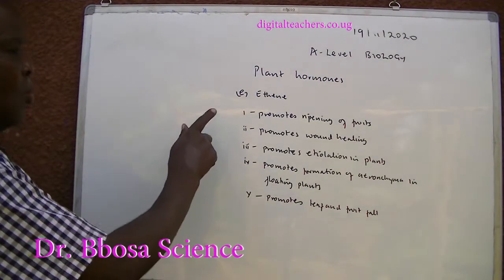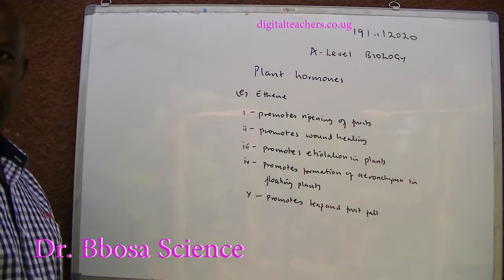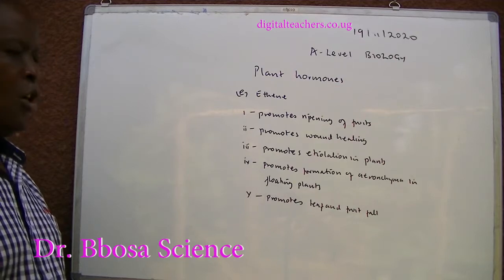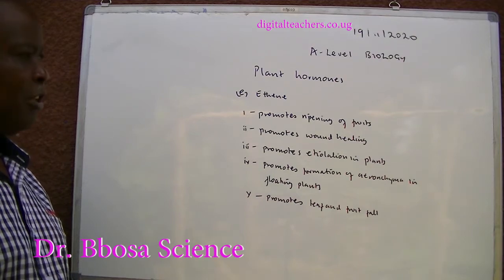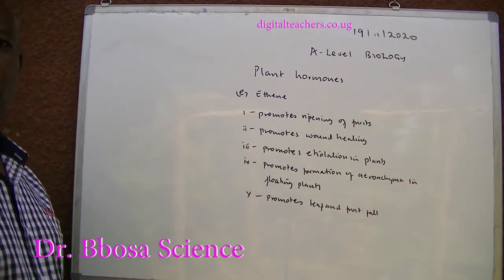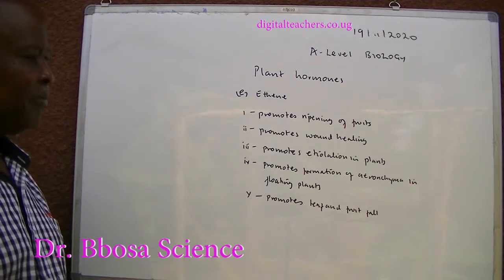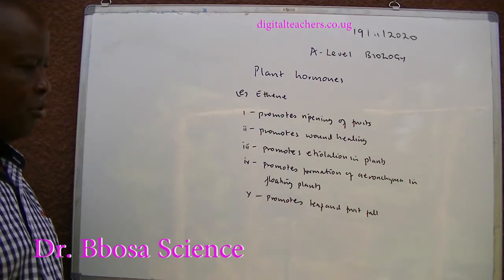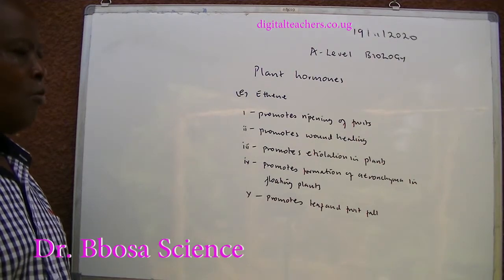Ethylene: one — promotes ripening of fruits; two — promotes wound healing; three — promotes etiolation in plants; four — promotes formation of aerenchyma in floating plants; five — promotes leaf and fruit falling.